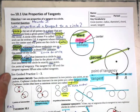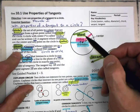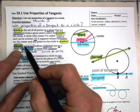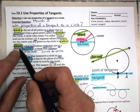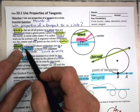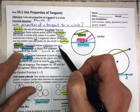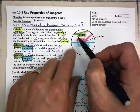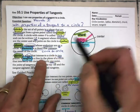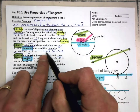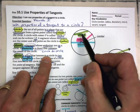Here are some new characteristics. A chord — it's pronounced 'chord' — is a segment whose endpoints are on the circle. So when you go from one point on the circle to another point on the circle, that segment is called a chord.